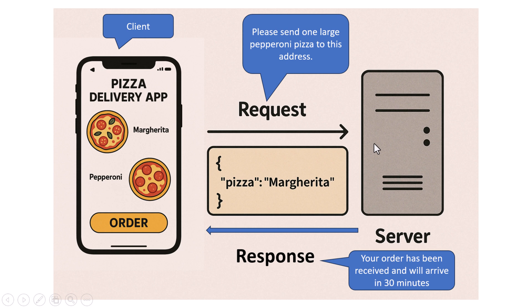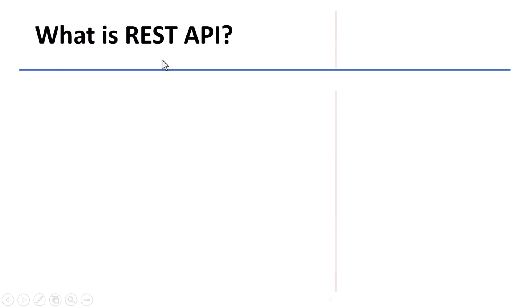In this example, the app on your phone is the client, the restaurant system is the server, and the API is the messenger that carries information between the client and the server. Now that you know what an API is, let us talk about REST.